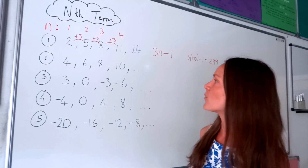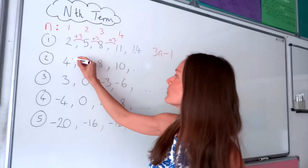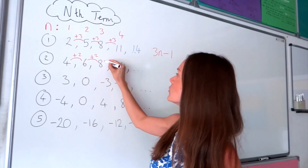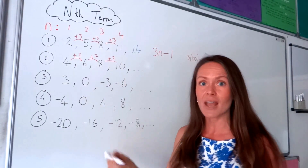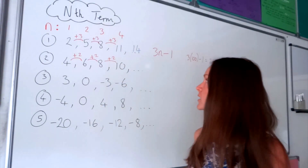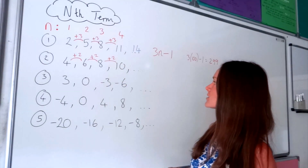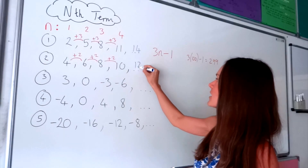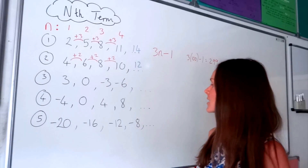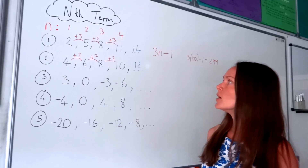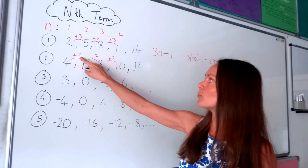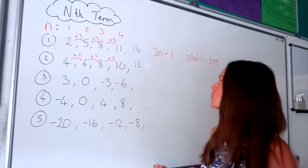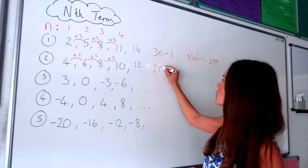Let's look at the second example. This time the difference between the numbers is 2 — we're adding 2 each time to find the next term. If I add 2 to the number 10, I get 12, so that's the next term. To find the nth term, we take this difference number, and because it's positive 2, we write down 2n.